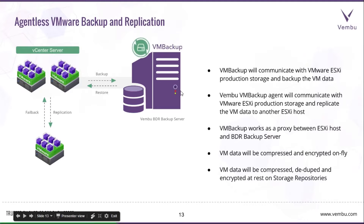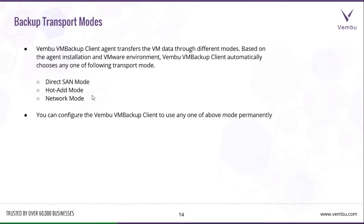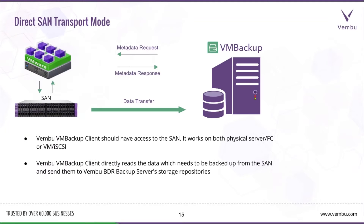Looking more deeply at VMware backup and replication: the Wambu BDR server uses Wambu VM Backup as a proxy to communicate with VMware servers, read data, encrypt it, and send it to the Wambu BDR backup server storage. The data is compressed and encrypted on the fly and stored in the storage repository using Wambu Hive. Wambu VM Backup uses various transport modes. Depending on the agent installation and environment being backed up, it will automatically choose the appropriate transport mode. You can also manually configure it to permanently use one specific mode. The transport modes are: Direct SAN mode, Hot Add mode, and Network mode.